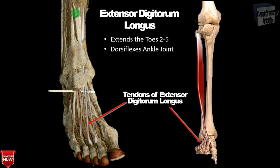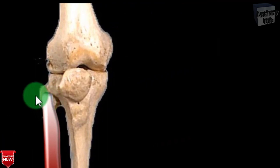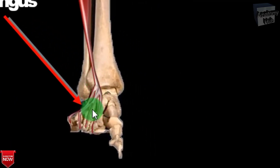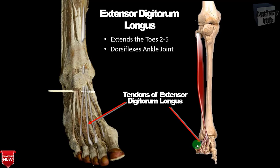The next muscle is the extensor digitorum longus, coming from the anterior compartment of the leg, extending to toes two to five, and dorsiflexing the ankle joint. It takes origin from the upper two-fourths of the anterior surface of the fibula and the interosseous membrane. Its insertion is the extensor expansion of the lateral four toes, from the second to the fifth digit. Its nerve supply is the deep peroneal nerve, and its action is extension of the lateral four toes along with dorsiflexion of the foot.